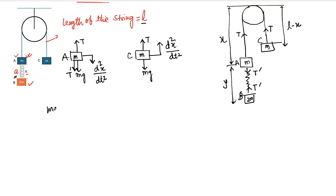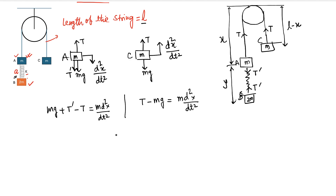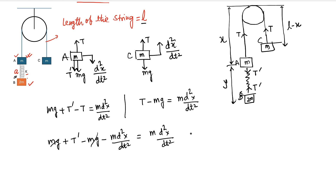Writing Newton's second law for mass A: mg + T' − T = m·d²x/dt². For mass C: T − mg = m·d²x/dt². Substituting the expression for T from the second equation into the first, we get: mg + mg + T' − mg − m·d²x/dt² = m·d²x/dt². The mg terms partially cancel, and we arrive at T' = 2m·d²x/dt². Let's call this Equation A.